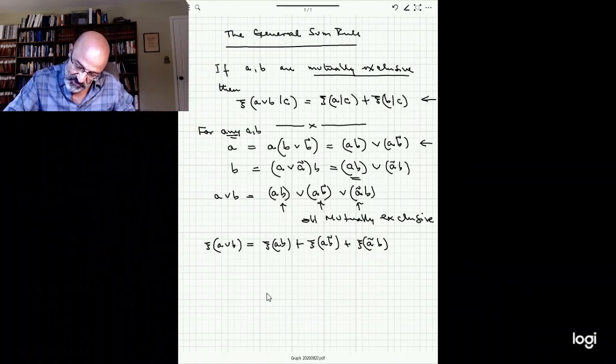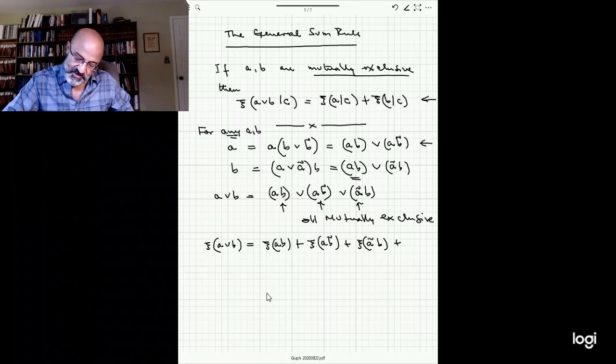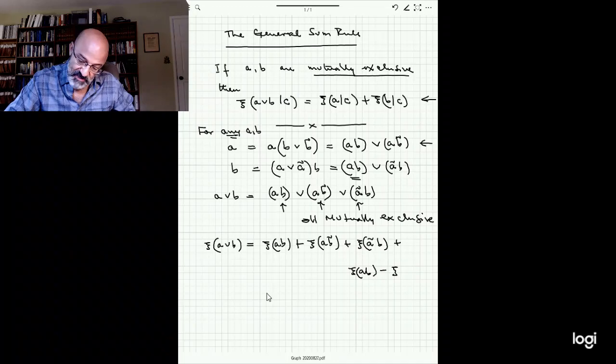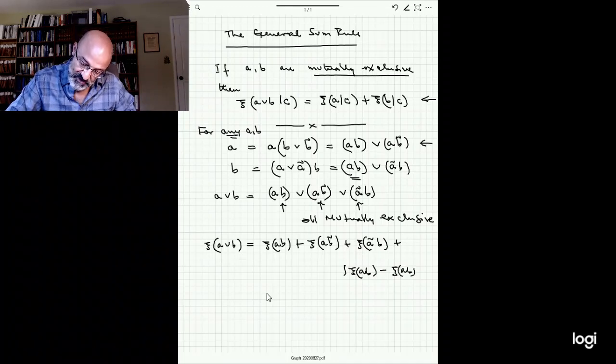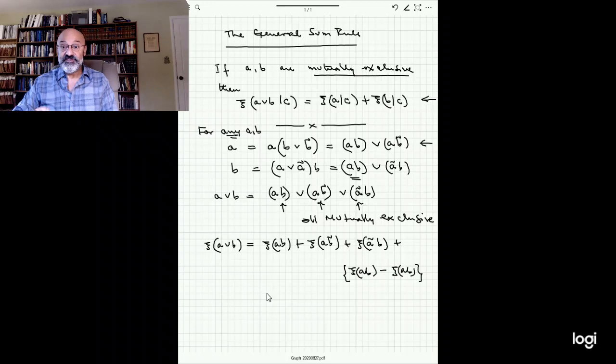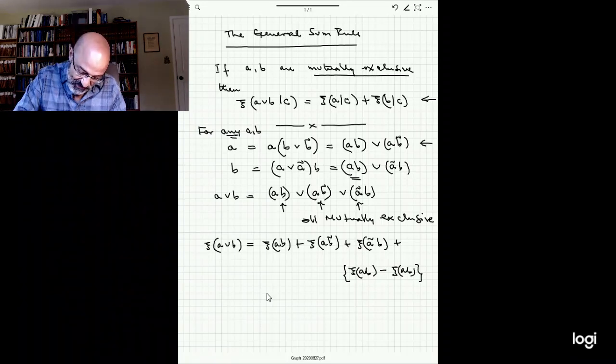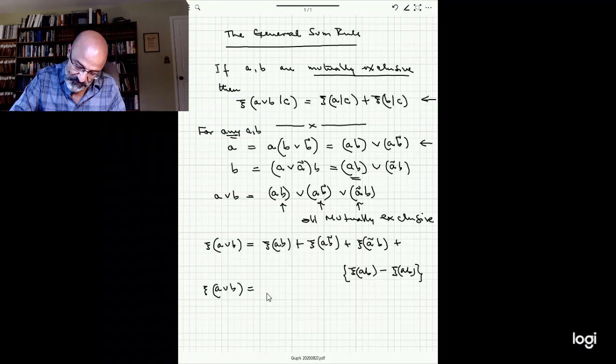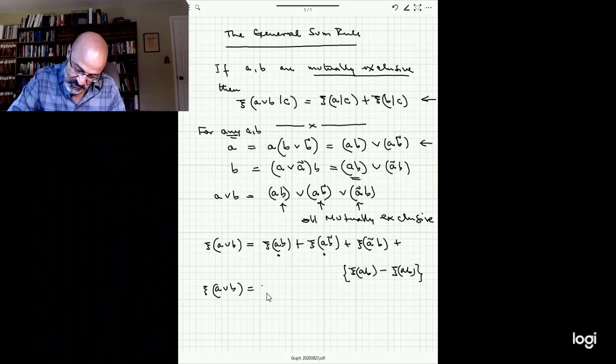And I'm going to do something else. I'm going to add and subtract CAB minus CAB. Clearly, I've added zero to this picture. But now if I collect all of these terms together, A or B, then if I do the first with the second.